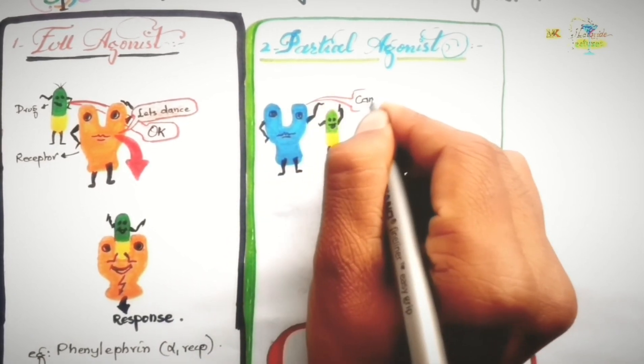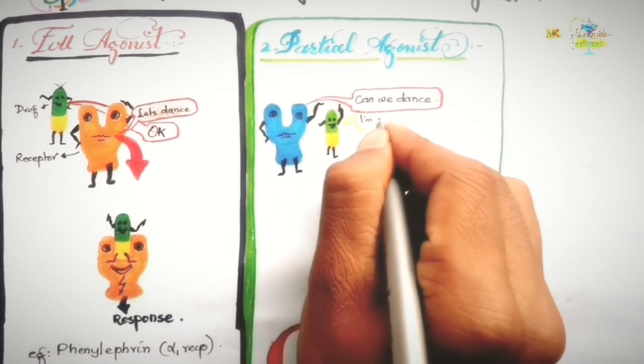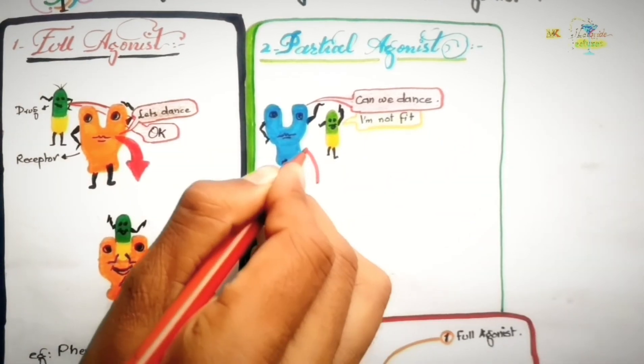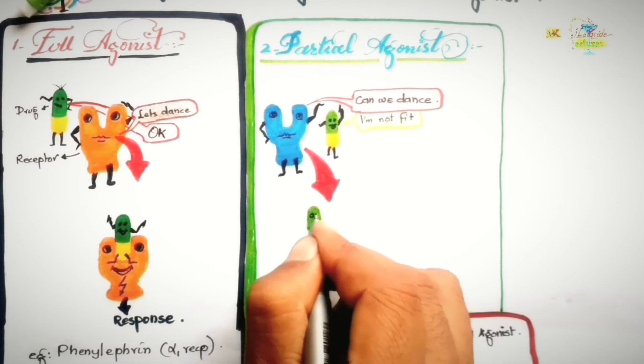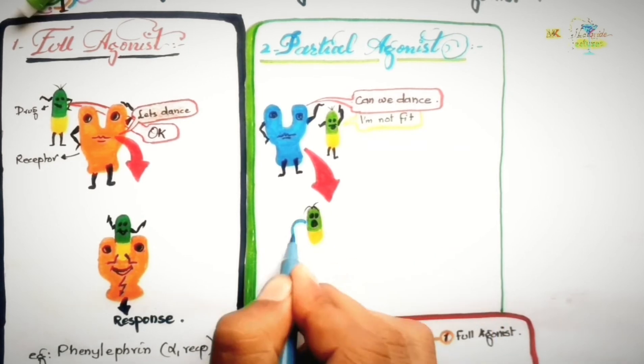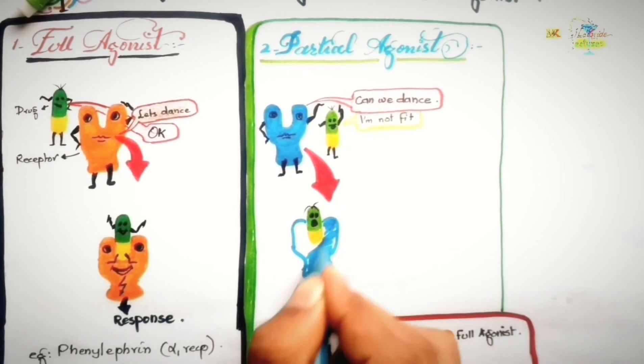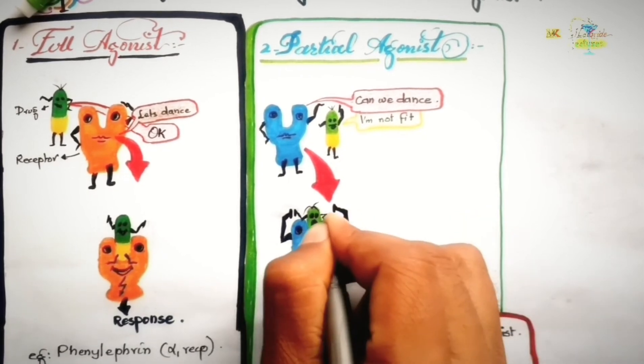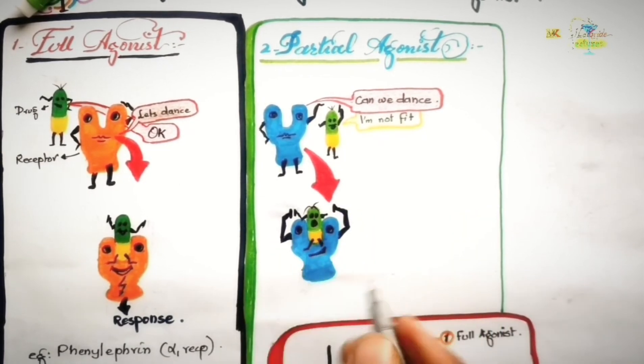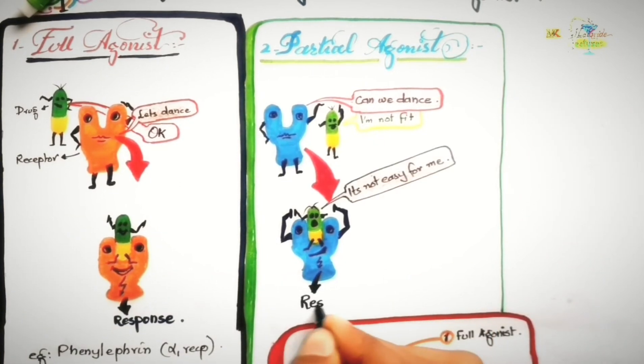So, it looks like that the receptor asking for dancing but the drug is limp with one leg. So, he can't do it perfectly. So, that's why the partial agonists are having affinity for the drug but cannot activate the receptor as the full agonist does. And subsequently, the response would be less than that of the full agonist.